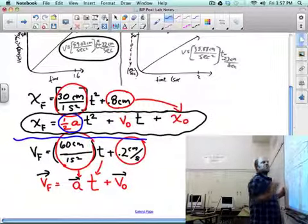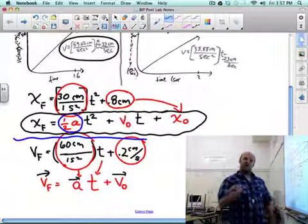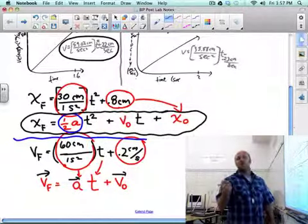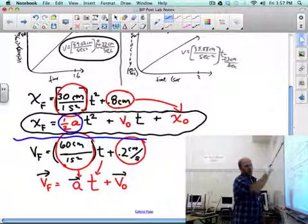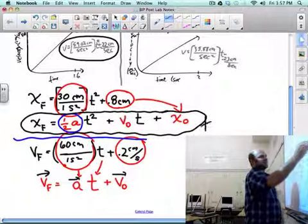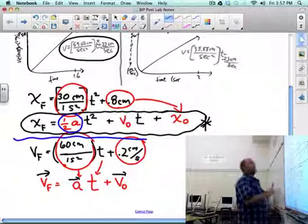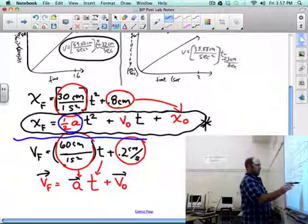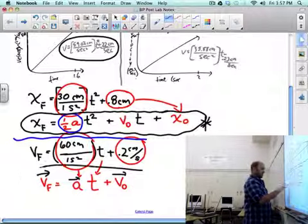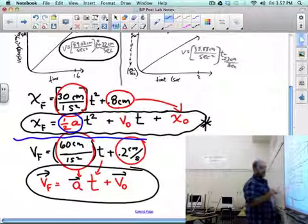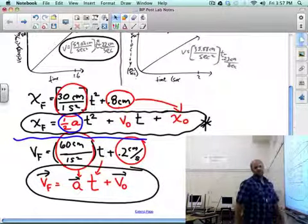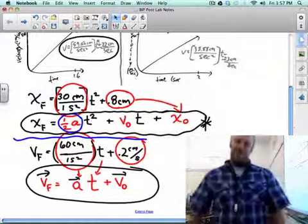This is the general form of the equation for your x versus t squared graph, your x versus t graph. Notice it's a quadratic, makes sense because it's a parabola, that graph's a curve. And this here is the general form of your velocity time graph equation. All right, thanks for watching. Have a good day.